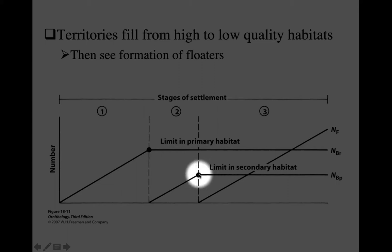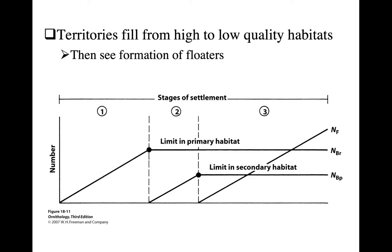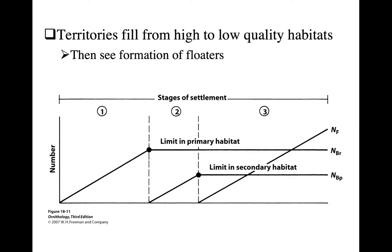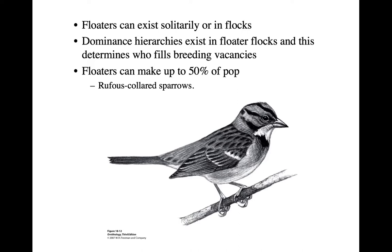Secondary habitats may be good enough to nest in, but the success associated with them may be reduced — there may not be enough resources, there may be less cover, there may be greater predation. They're not quite as good but worth attempting a nesting attempt. Any individual that arrives after all habitats are full finds no room, and at that point we establish what are called floaters. All subsequent individuals are floaters.